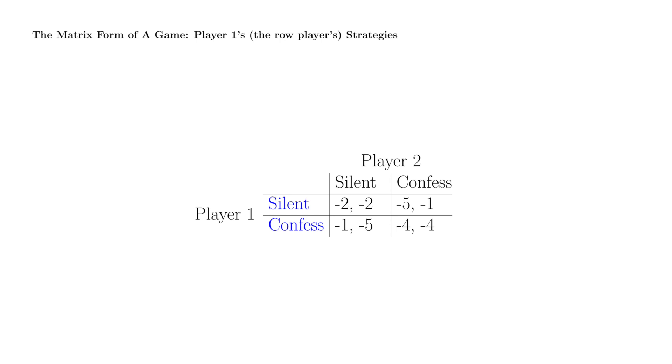Player 1 strategies are labeled in blue here. Each entry at the leftmost column of the matrix represents a strategy belonging to the player named at the left of the matrix. Player 1 is also called the row player since her choice of strategy selects a row of the matrix.